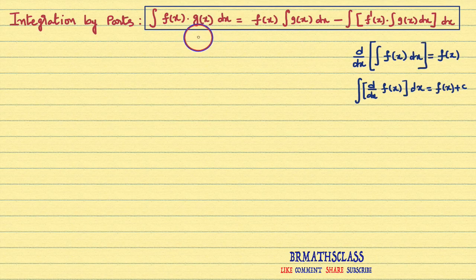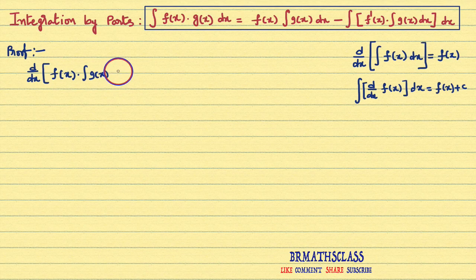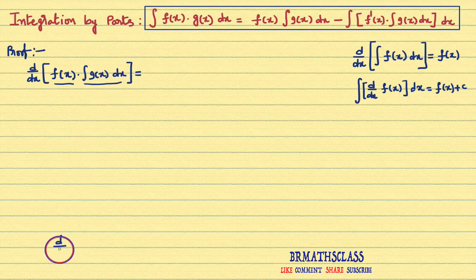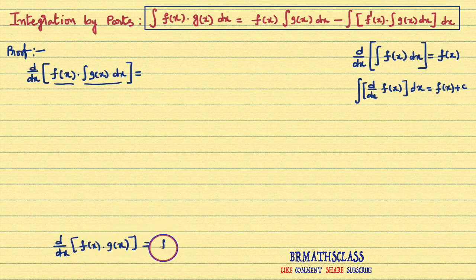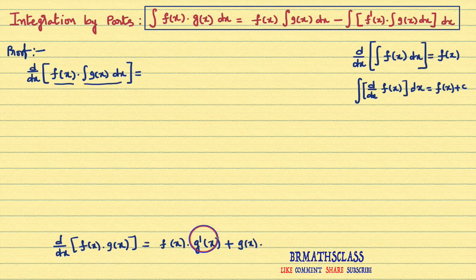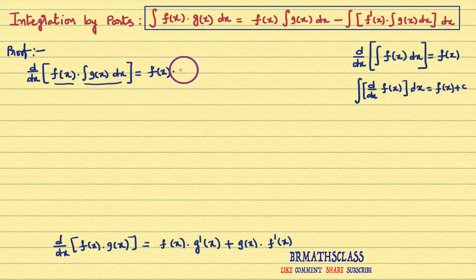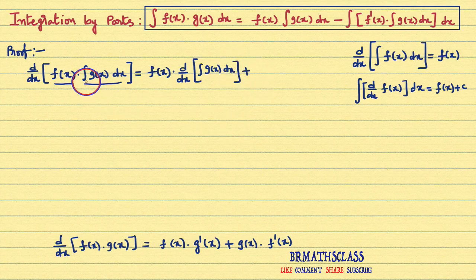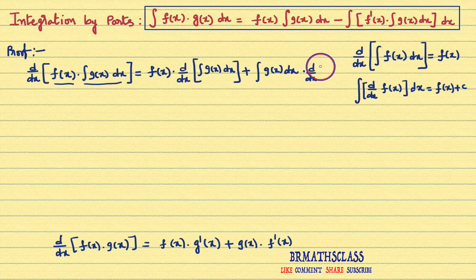Now, to prove this integration by parts result, I will first consider this expression: the derivative of f(x) into integral of g(x) dx. This is one function and this is another function — derivative of a product of two functions. We know this product rule formula from the differentiation chapter. The product rule states: derivative of f(x) times g(x) equals f(x) into derivative of g(x), denoted g'(x), plus g(x) into derivative of f(x). Applying this: the first function is f(x), into the derivative of the second function d/dx of integral of g(x) dx, plus the second function — integral of g(x) dx — into the derivative of the first function d/dx of f(x).